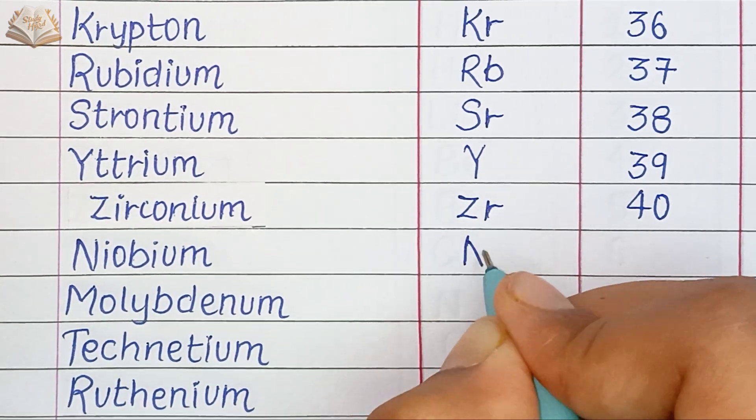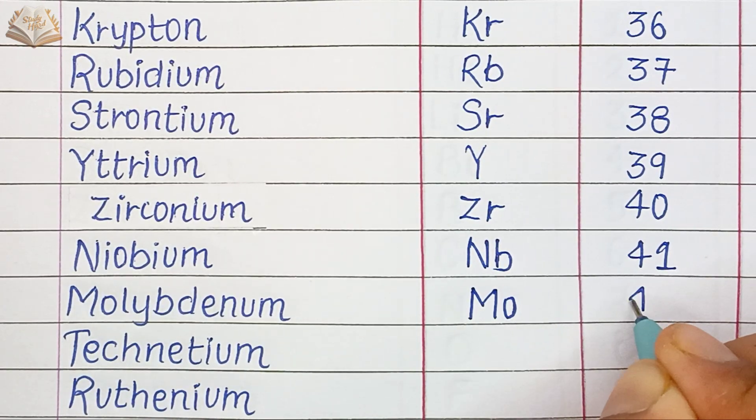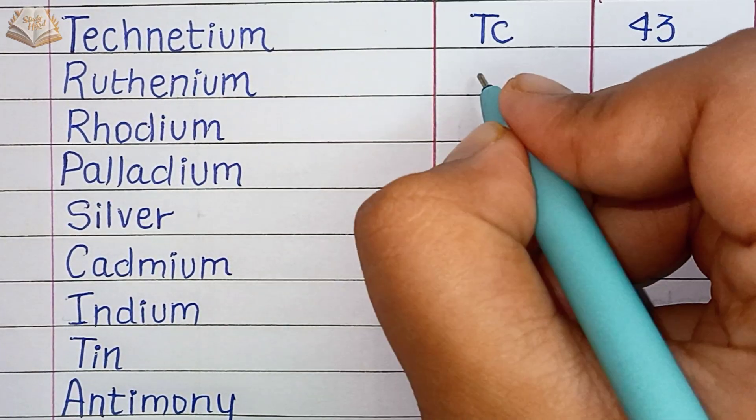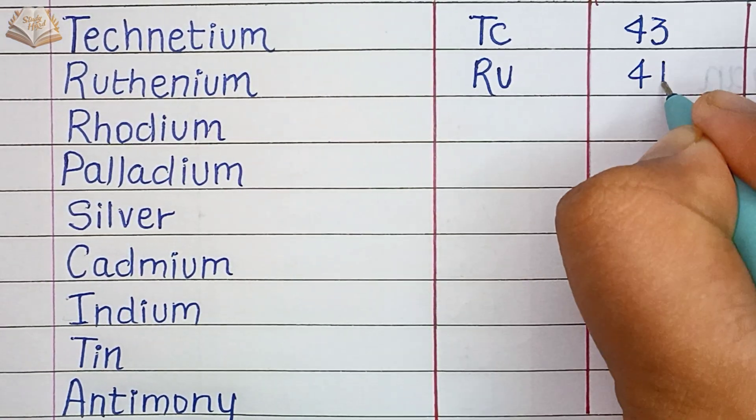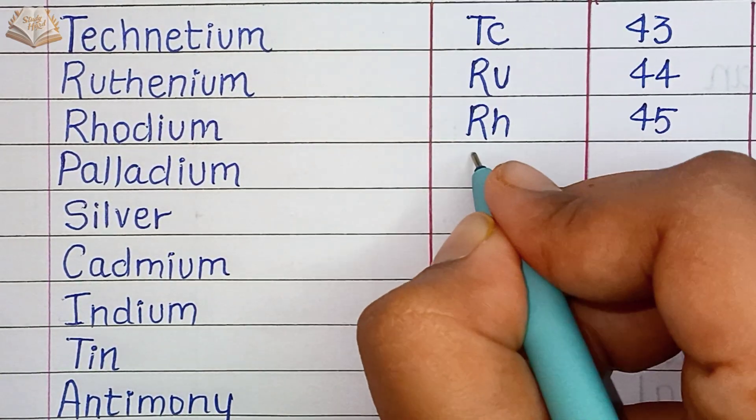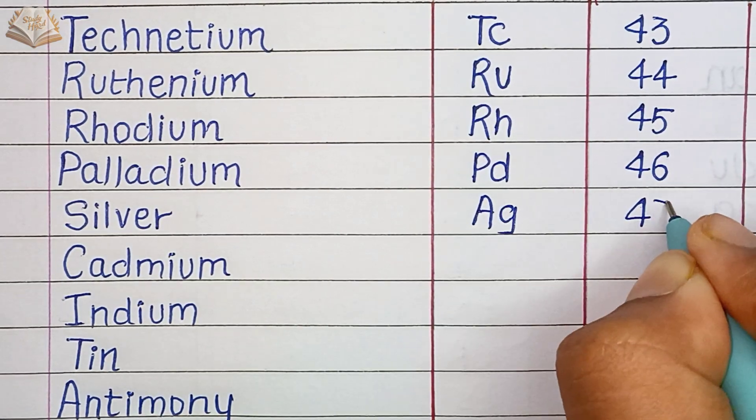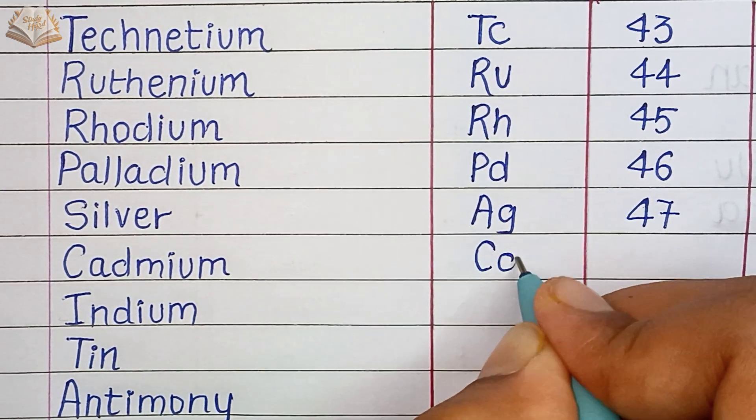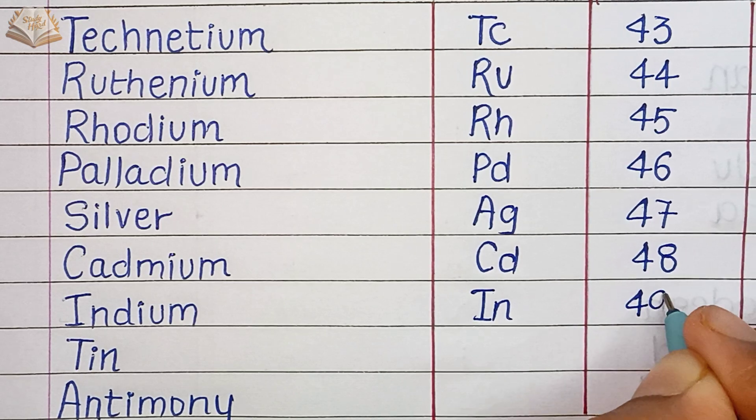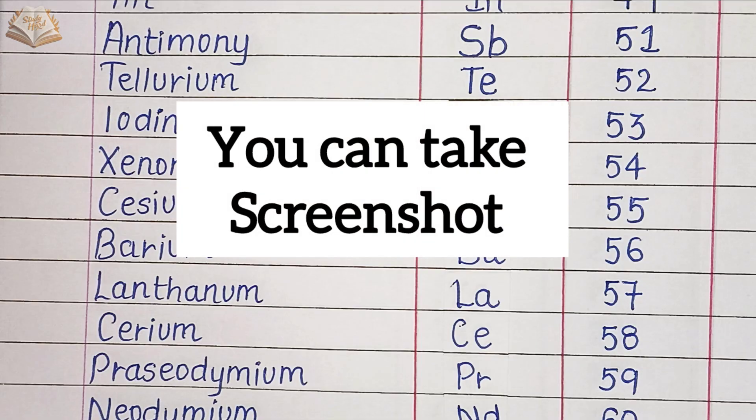Niobium, Nb, atomic number 41. Molybdenum, Mo, atomic number 42. Technetium, Tc, atomic number 43. Ruthenium, Ru, atomic number 44. Rhodium, Rh, atomic number 45. Palladium, Pd, atomic number 46. Silver, Ag, atomic number 47. Cadmium, Cd, atomic number 48. Indium, In, atomic number 49. Tin, Sn, atomic number 50. You can take a screenshot here.